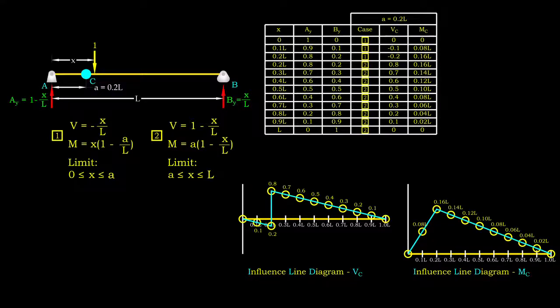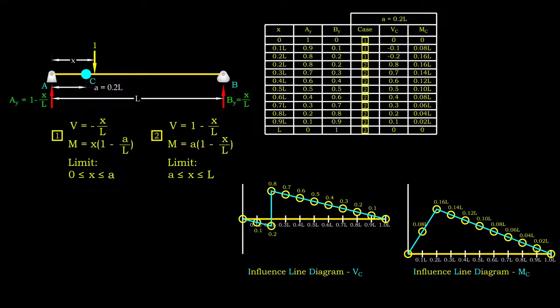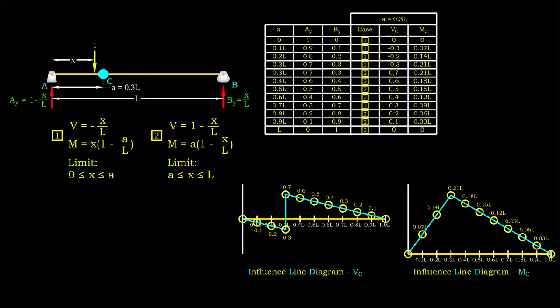In previous video, we have looked into the development of influence line diagram for a simply supported beam, which is applicable to the analysis of girder bridge. How would the diagrams look like if we are using truss bridge instead?